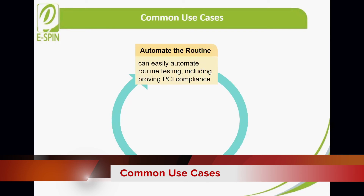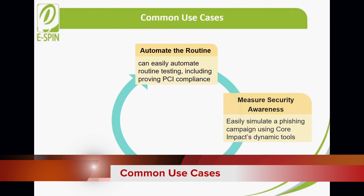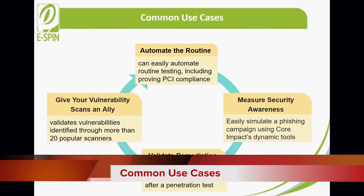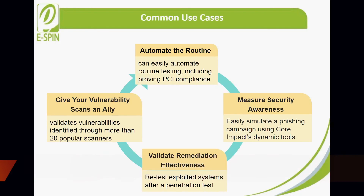Common use cases. Automate the routine — with Core Impact, you can easily automate routine testing, including proving PCI compliance, to maximize your resources, and receive third-party testing for more robust and complex requests. Measure security awareness — easily simulate phishing campaigns using Core Impact to find out who is vulnerable to social engineering attacks. Validate remediation effectiveness — retest exploited systems after a penetration test to verify that remediation measures or compensating controls are effective and working. Give your vulnerability scan an ally — Core Impact validates vulnerabilities identified through more than 20 popular scanners, helping you prioritize remediation for your greatest security risks.